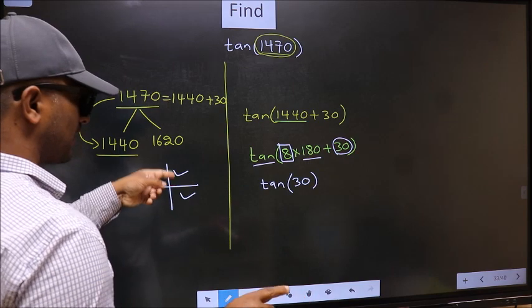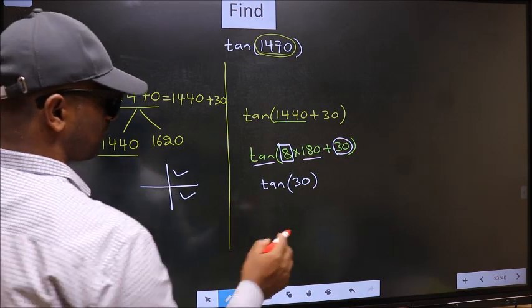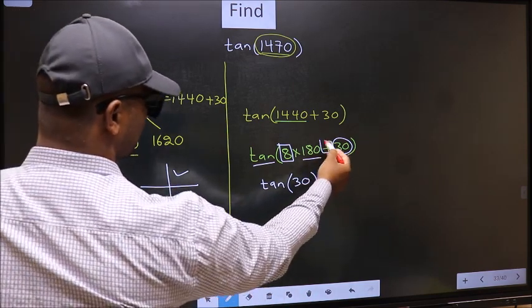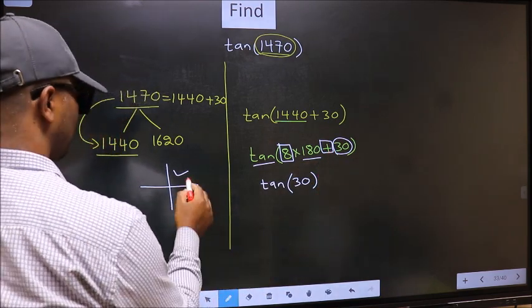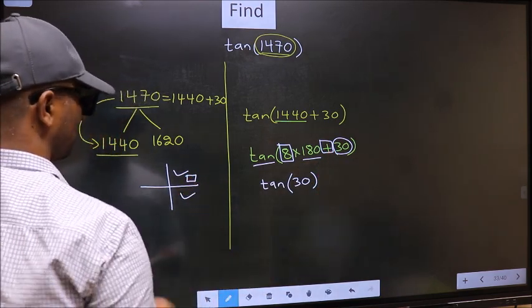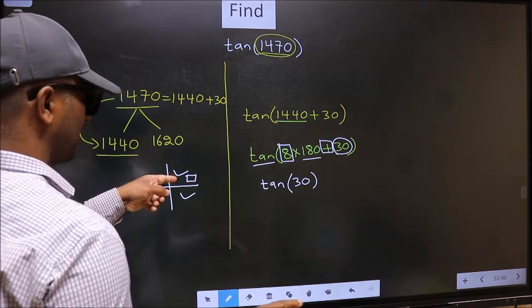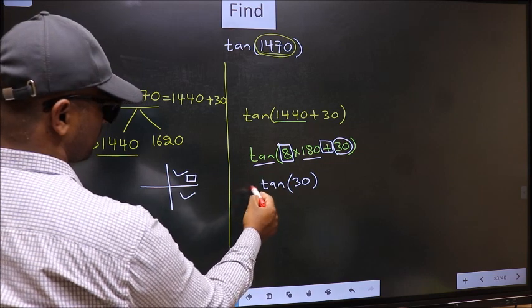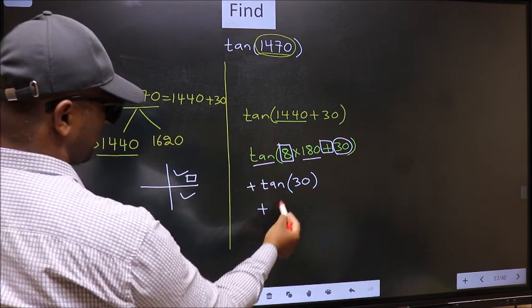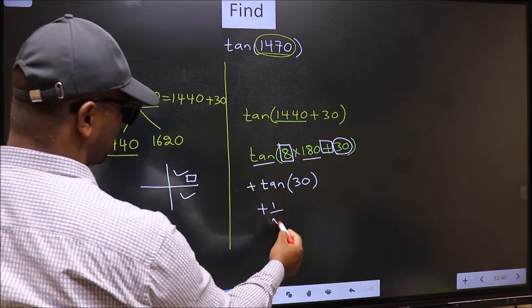So now, to select the quadrant, we should look at this symbol. Here we have plus. That means, angle lies in the first quadrant. And in the first quadrant, tan is positive. So we should put plus. So plus tan 30 is 1 by root 3. This is our answer.